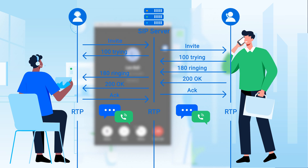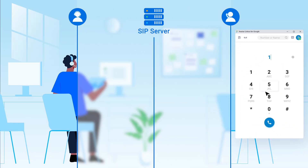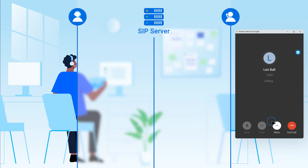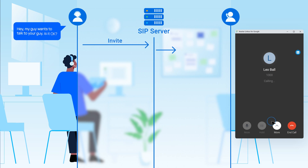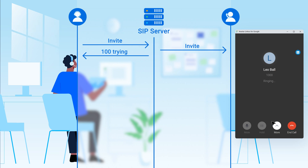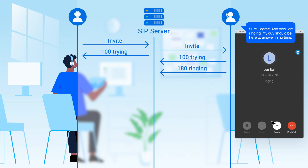Let's break it down. Right after you dial the number, your phone actually sends an invitation through the SIP server to your colleague's phone that basically says: "Hey, my guy wants to talk to your guy. Is it okay?" Your colleague's phone will see the invitation, and if everything's okay, approve the request by sending back a message that says: "Sure, I agree. And now I'm ringing — my guy should be here to answer in no time."